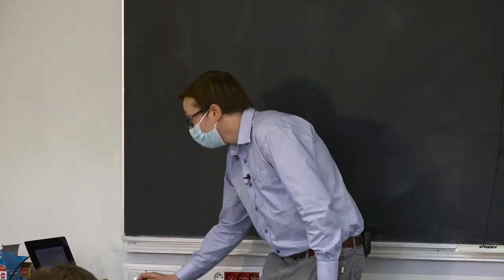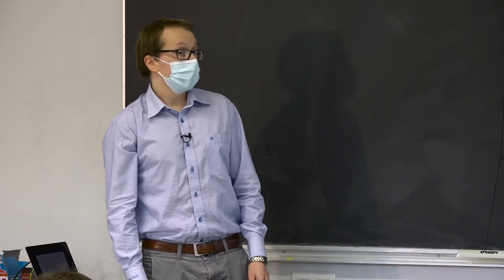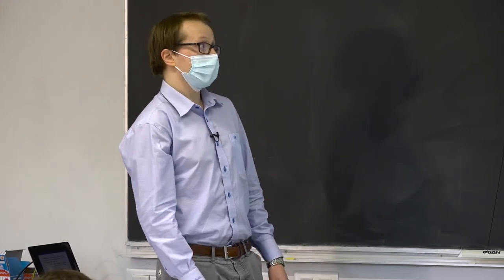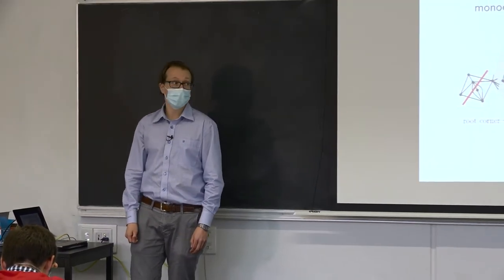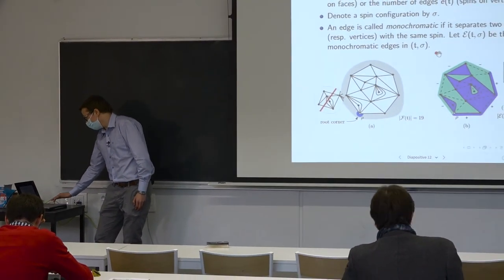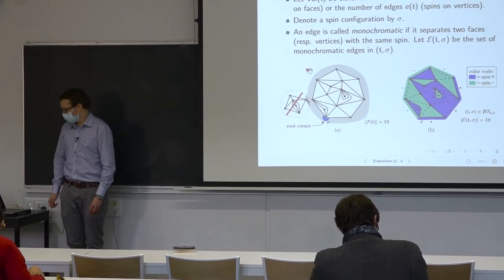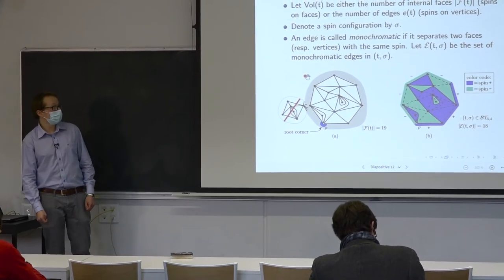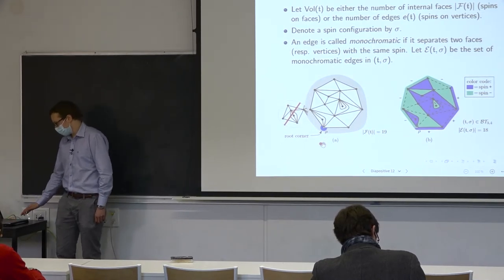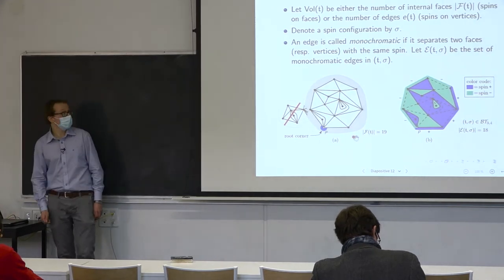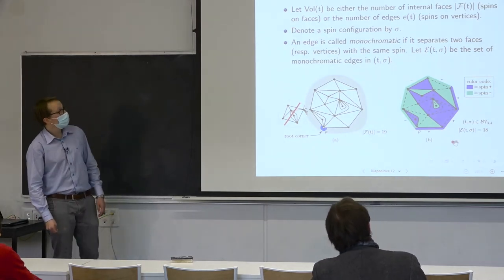We count the volume of the triangulation either by the number of internal faces — when spins are on the faces — or by the number of edges when spins are on the vertices. We denote the spin configuration by sigma and call an edge monochromatic if it separates two faces or vertices with the same spin. We denote by E(T, sigma) the set of monochromatic edges in a fixed triangulation T with Ising spin configuration.